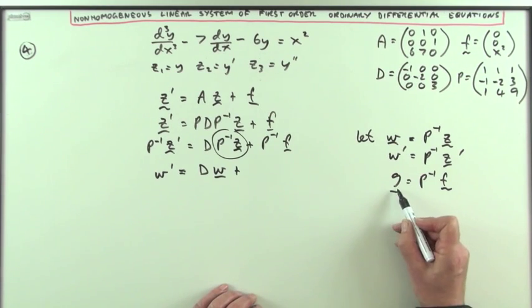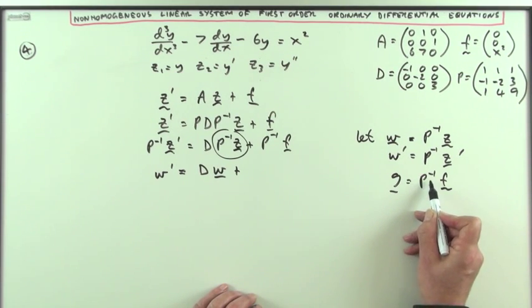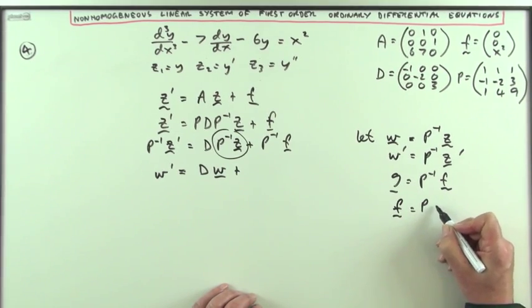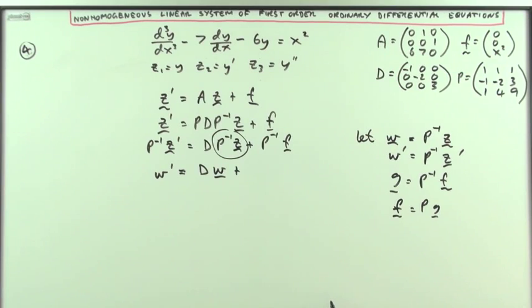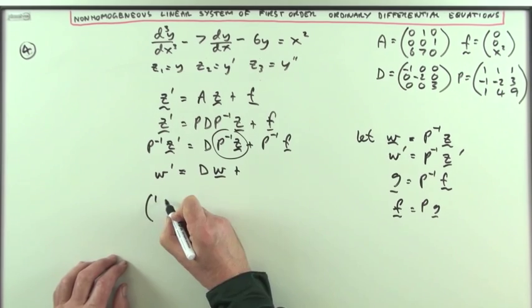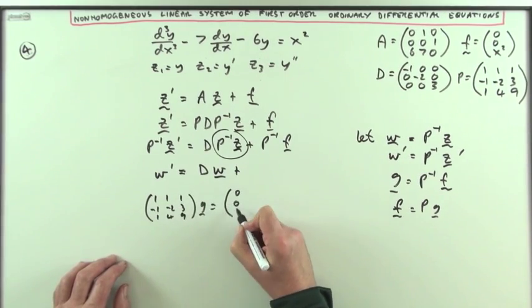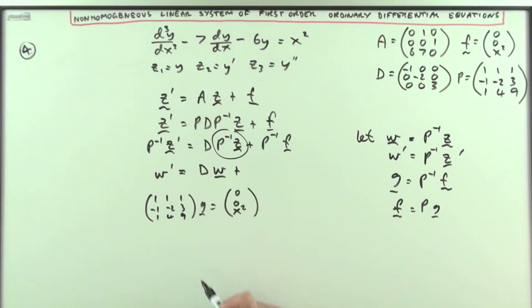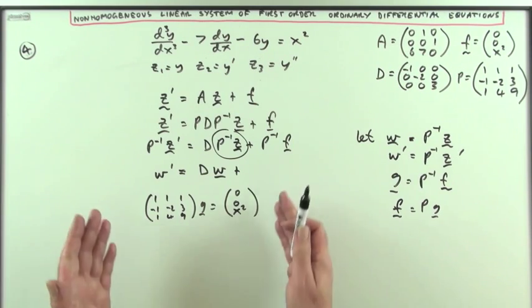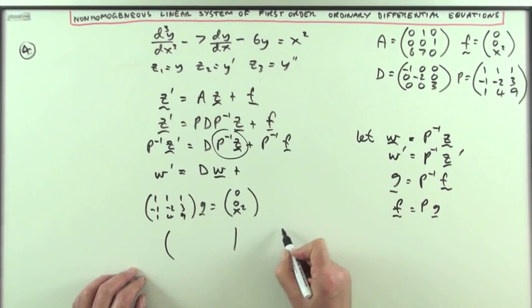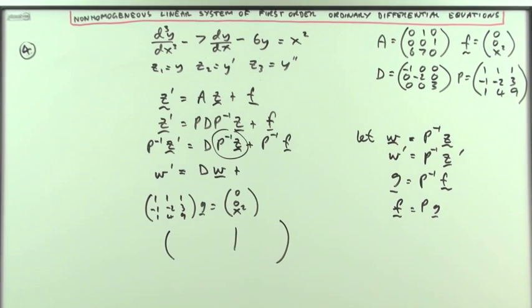I'll find that just now. So what have I got? Well, if g is equal to the inverse of P times f, that means that f is going to equal P times g. So I'll solve that system of equations. P, g equals f. Well that would be g1, g2, g3. And of course to solve that, I would take the augmented matrix. So my augmented matrix would end up looking like this then.